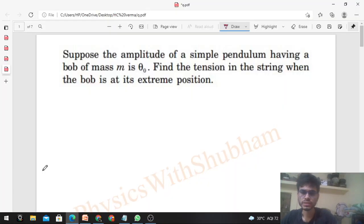Okay, hi everyone. Today we will discuss this interesting problem. Suppose the amplitude of a simple pendulum having a bob of mass m is θ₀. Find the tension in the string when the bob is at its extreme position. So this bob is in angular SHM.